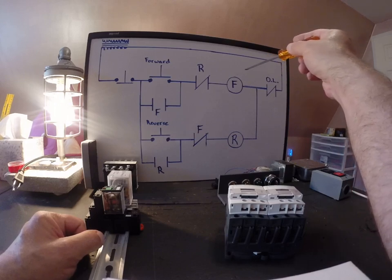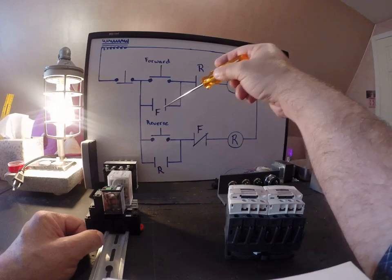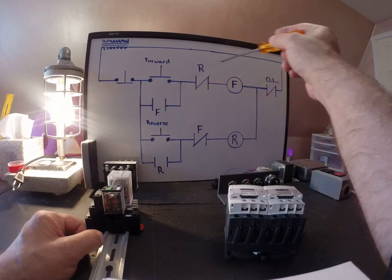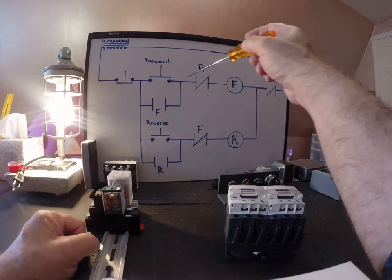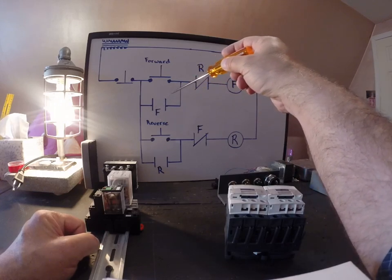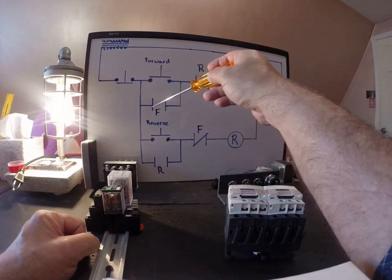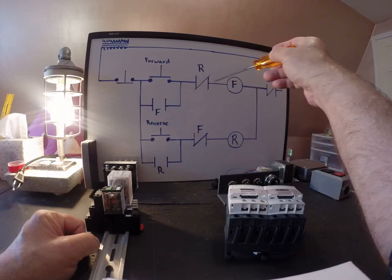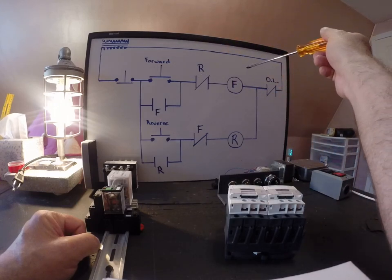And of course, at this point, we should know when we energize a coil, the contacts that have the same name change state instantaneously in this case. So the F-coil becomes energized. This F-contact would close and I would maintain my holding circuit through that contact to the coil through the overload and then back home.